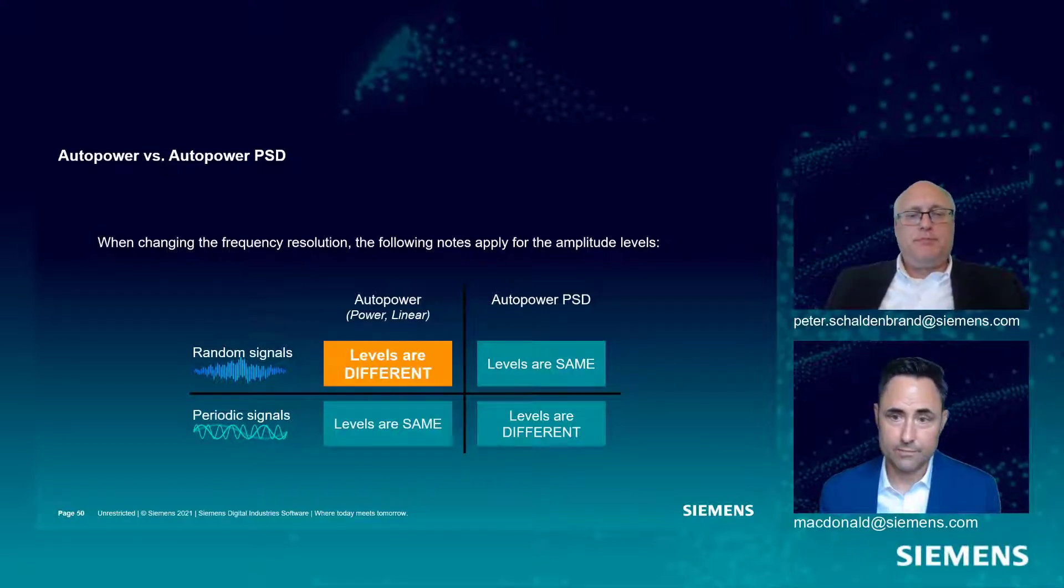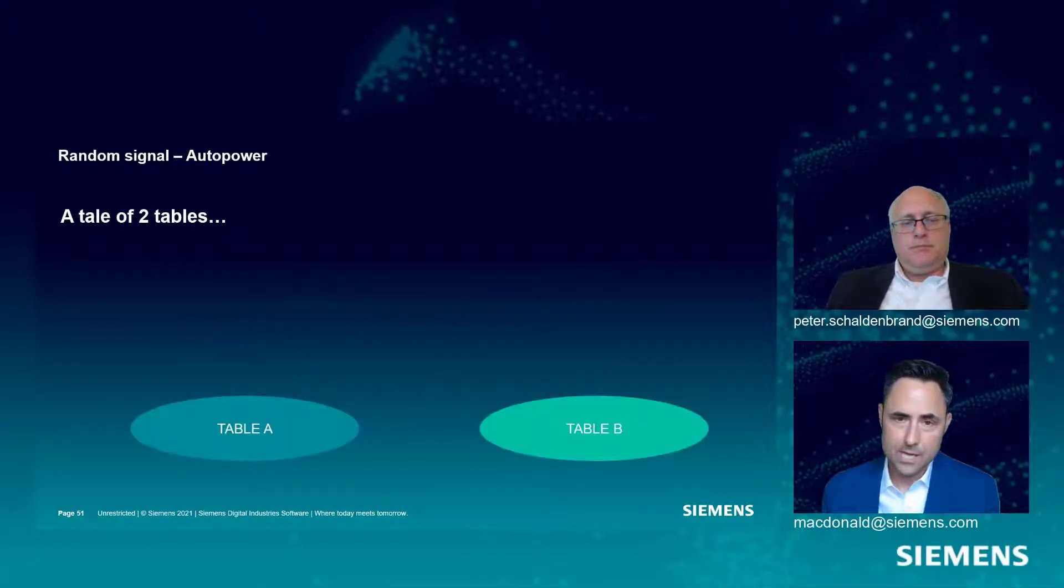First we're going to look at a random signal and an Autopower. The levels come out as different. Come with me to the local bowling alley and we have two tables, Table A and Table B.